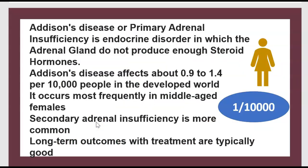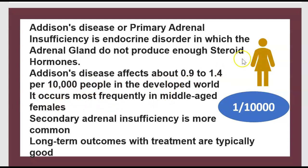Addison's disease, or primary adrenal insufficiency, is an endocrine disorder in which the adrenal glands do not produce enough steroid hormones. It affects about 1 per 10,000 people in the developed world. Secondary adrenal insufficiency is more common. Long-term outcomes with treatment are typically good.